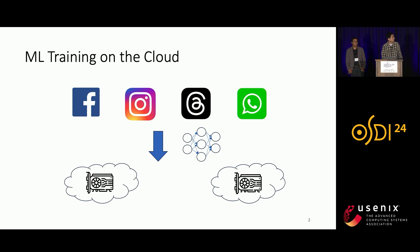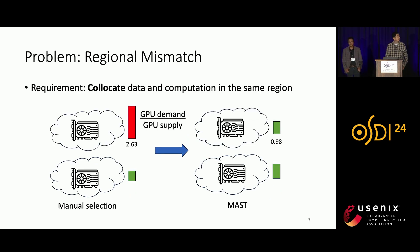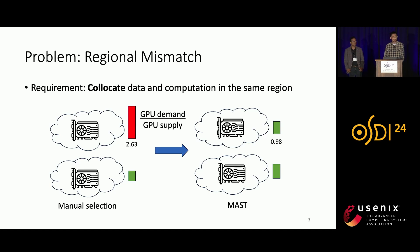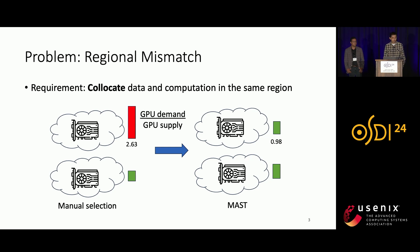In such a geo-distributed cloud environment, since GPU is very expensive and cross-region traffic is also very expensive, Meta requires that the input data and the computation of a training job must be co-located inside the same data center region to minimize GPU costs and cross-region traffic. However, relying on a user to manually select a region to store the input data and to run the computation can often lead to suboptimal results.